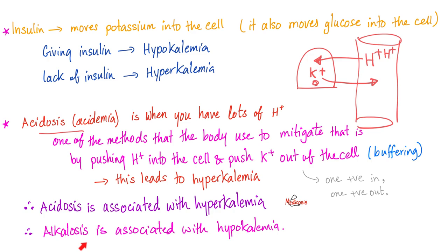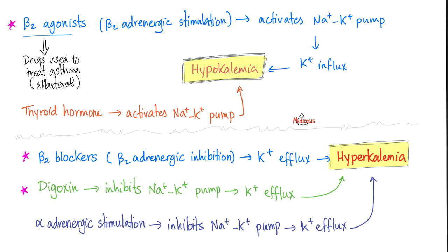Conversely, if I have alkalosis, it goes with hypokalemia. Some students use the mnemonic: alkalosis — potassium loss. Alkalosis is associated with hypokalemia, i.e., potassium loss.